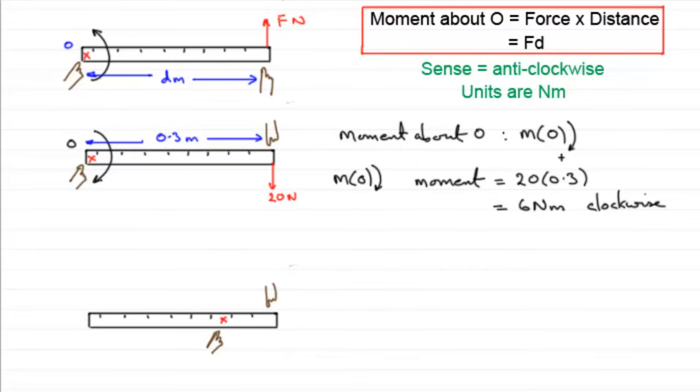Let's say we push down with a force again of 20 newtons. Well, what's going to happen? The ruler is going to want to turn in a clockwise sense about that point. Now, suppose we wanted to keep this ruler in equilibrium. We didn't want it to turn.